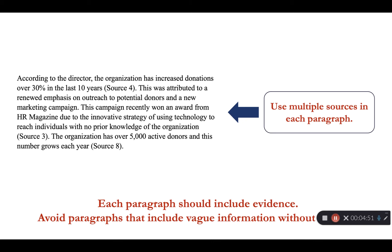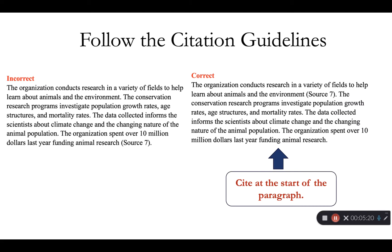A strong persuasive argument will use evidence from multiple sources to support each point. It should be clear where all the information is from, and you should have at least two sources in each paragraph. You may find information about your nonprofit that does not portray the best image of the organization. Since your reader might be familiar with this negative information, you should mention it in the report and explain why it is still a strong organization despite its weaknesses. Cite your sources at the start of the paragraph, and as you introduce new sources in the paragraph, cite each source so it is clear where each piece of information is from.